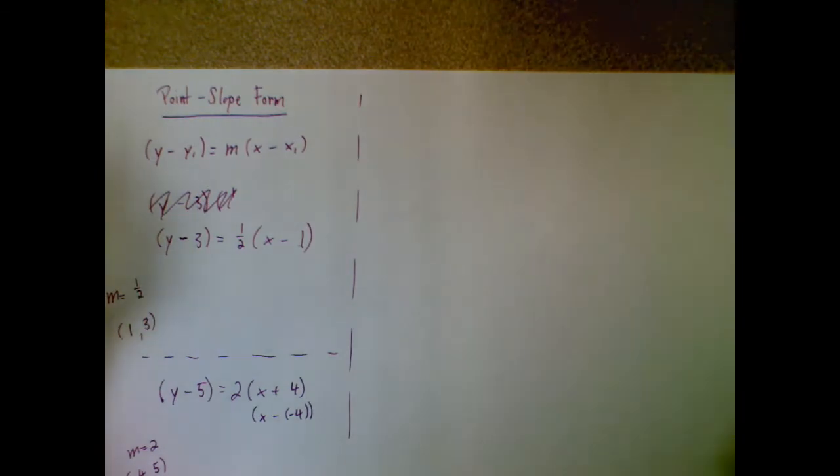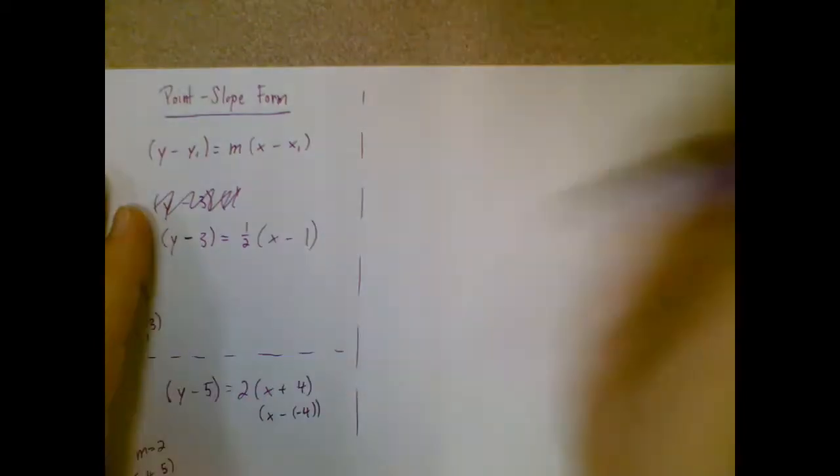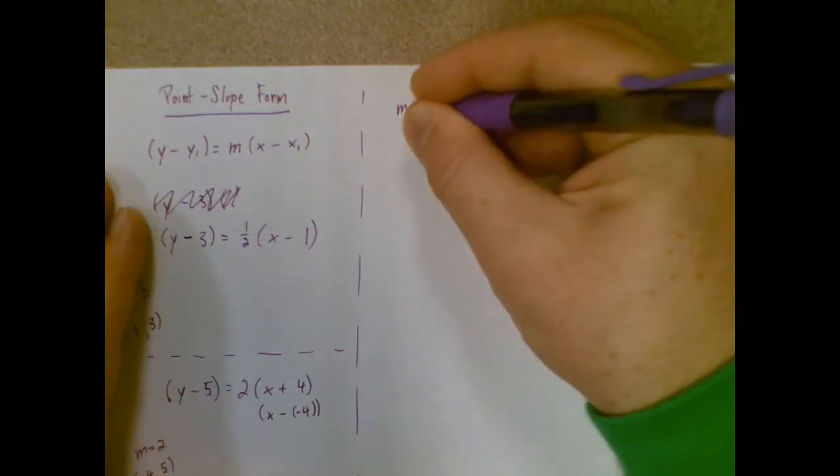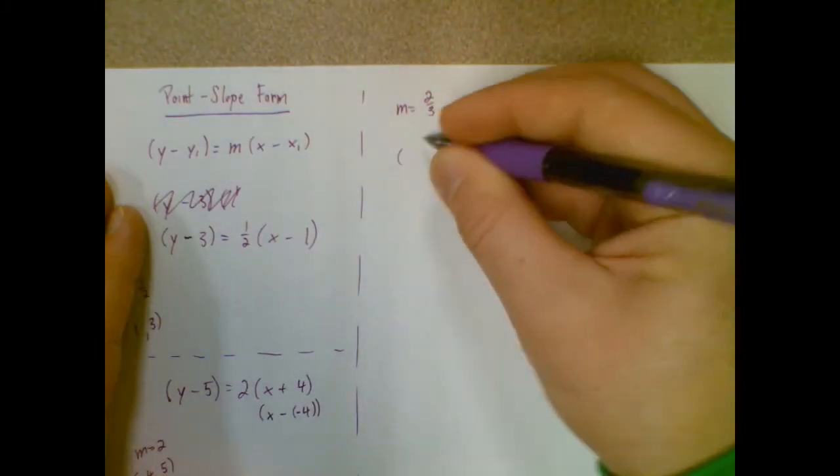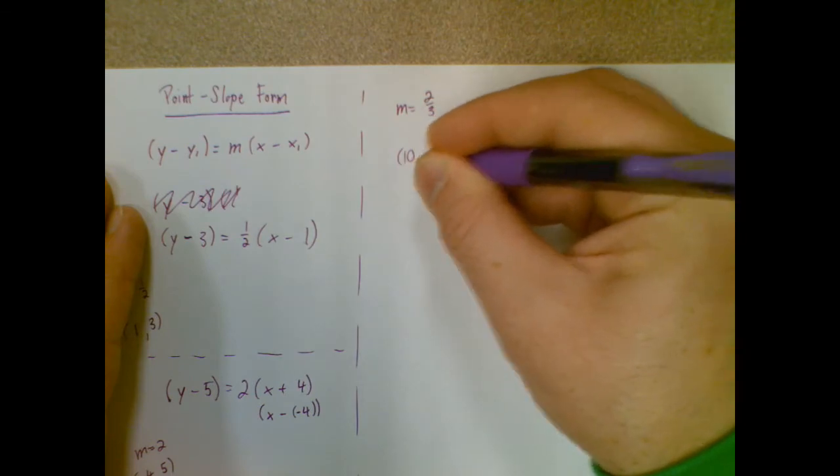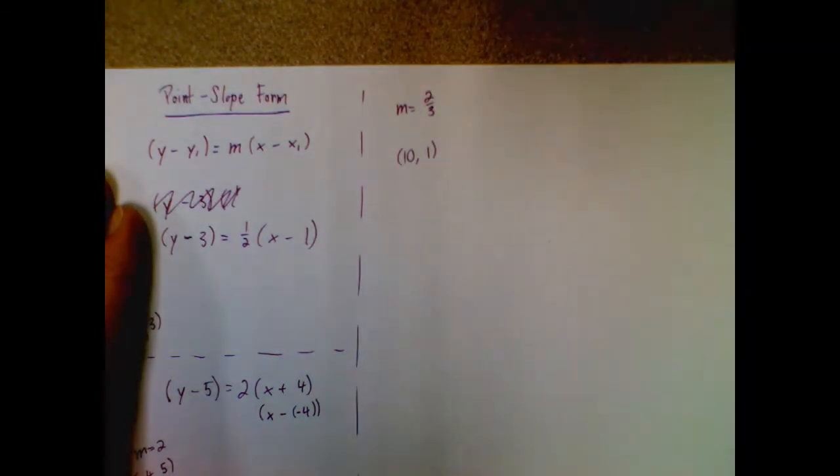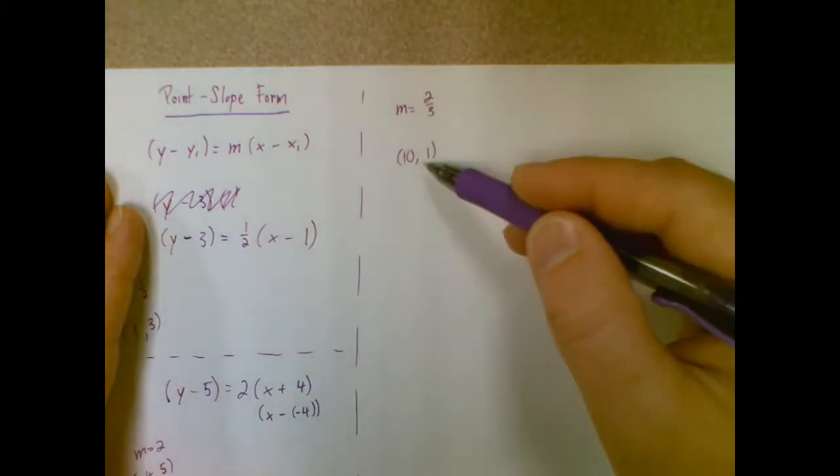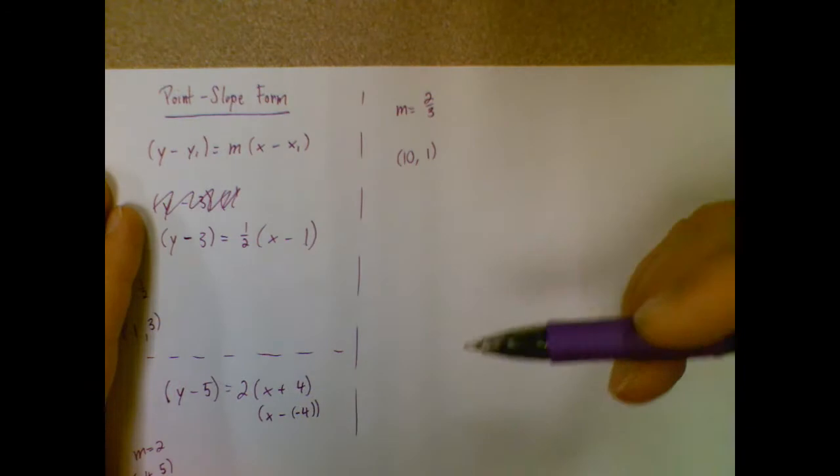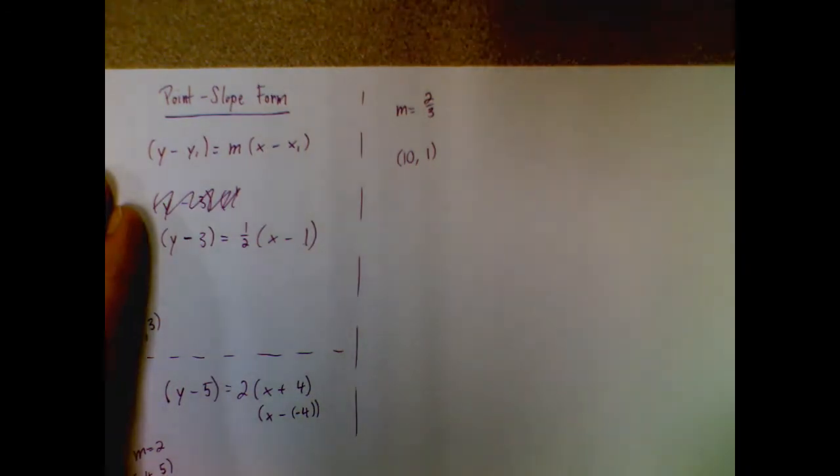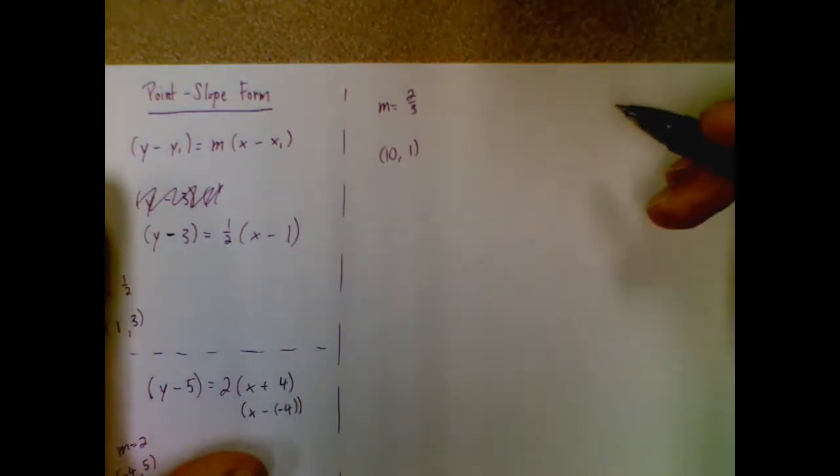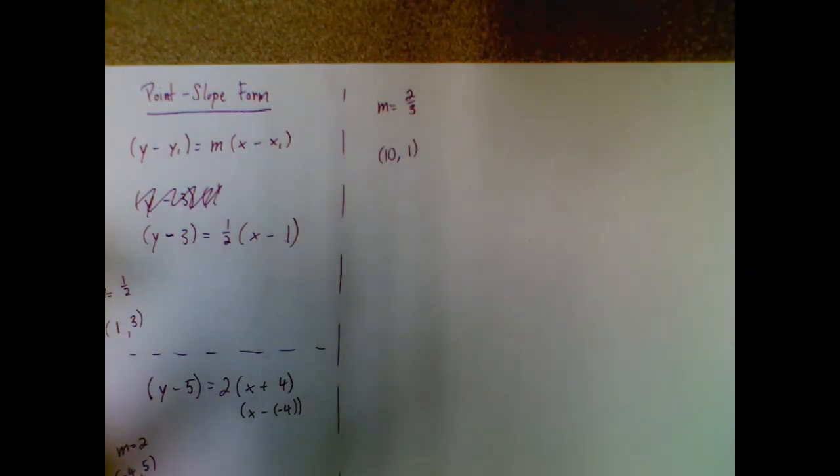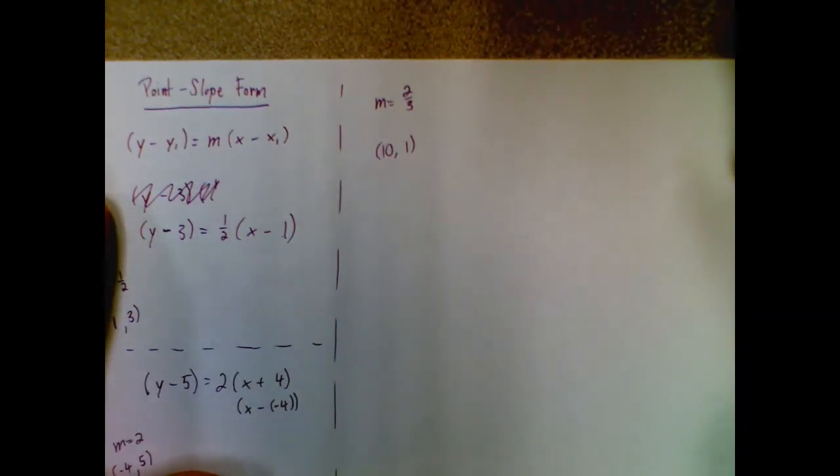But this is more useful in terms of what if I'm trying to find an equation and have a point and a slope. So let's say we have a slope of two-thirds and a point at ten-one. So I can use my point-slope form to find an equation of this one. And I'll show you the way it usually ends, which is actually the slope-intercept form. But we'll get to that too if you haven't seen that yet.